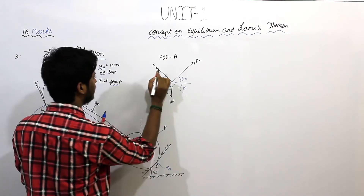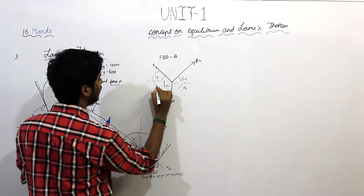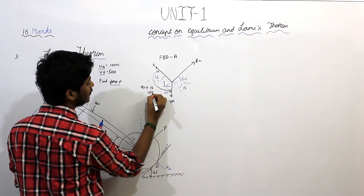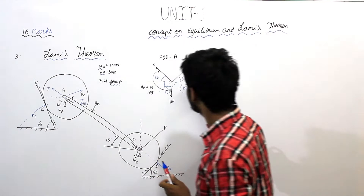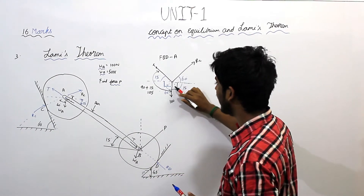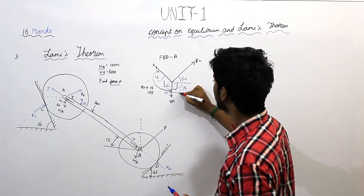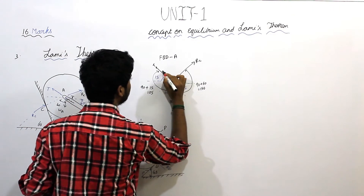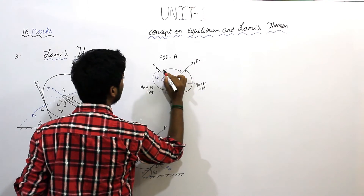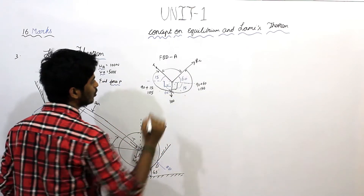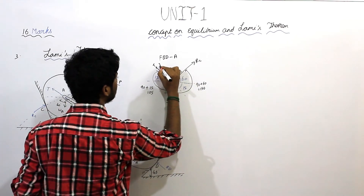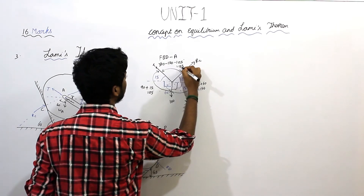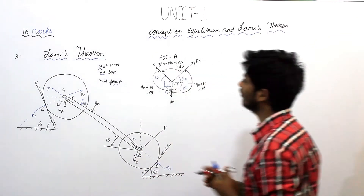We know the value of this complete angle: 15 degrees. Here it is 105 degrees. Same way here — this is a right angle, 90 plus 60 equals 150 degrees. For finding the remaining angle, the sum of angles in a circle equals 360 degrees. So 360 minus gives us 135 degrees.